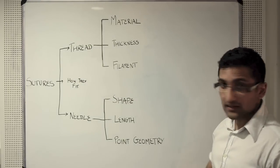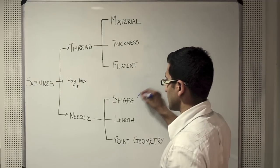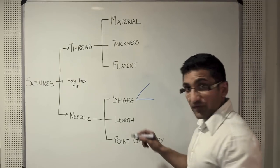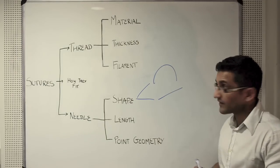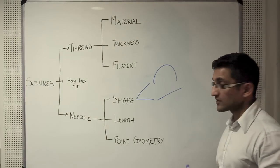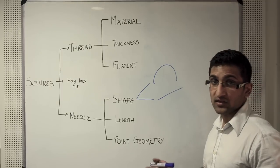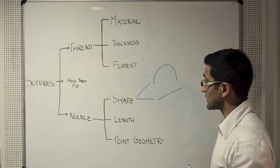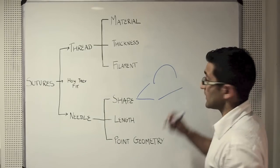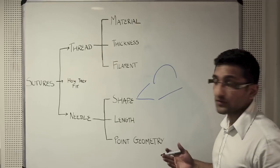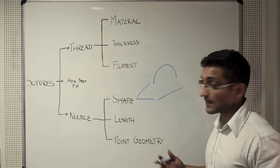Thinking now about the needle, there are three things to consider. The shape of a needle can either be curved or straight. The majority of needles are curved — straight needles are mainly seen in obstetrics and gynaecology, for example when suturing after a caesarean section. The curvature can be half-circle, quarter-circle, or three-quarter-circle, and all of this information will be seen on the suture pack itself.